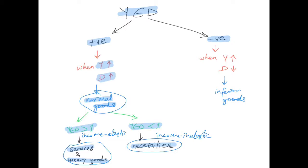Now, what if income elasticity of demand is negative? This happens when income increases but demand decreases. This is usually the case with inferior goods. Inferior goods are goods that the consumer deems as somewhat less superior. Very good examples are second-hand clothing or public transport. When people experience increases in their income, they buy less of these goods because they go and buy the more superior good.